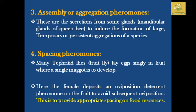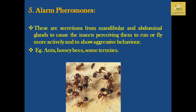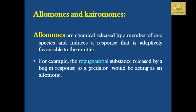Spacing pheromones provide appropriate spacing of food resources for the pupae and larvae. Alarm pheromones are secretions from mandibular and abdominal glands that cause the receiving insect to run or fly more actively and show aggressive behavior. Alarm pheromones can be seen in ants, honeybees, and some termite colonies.